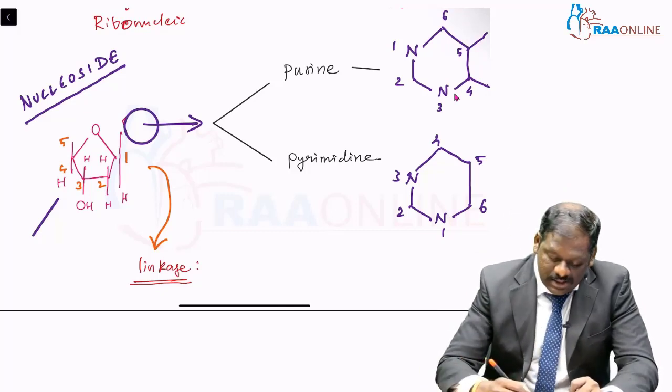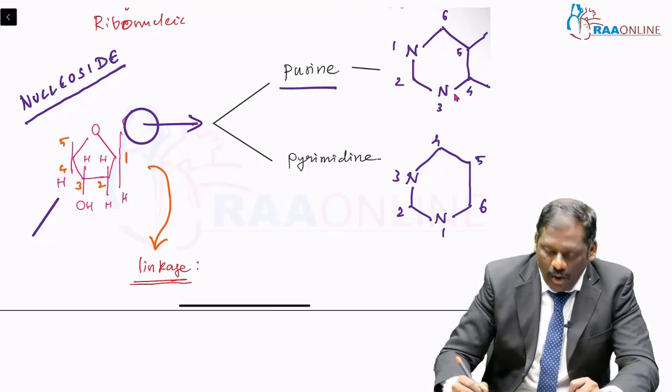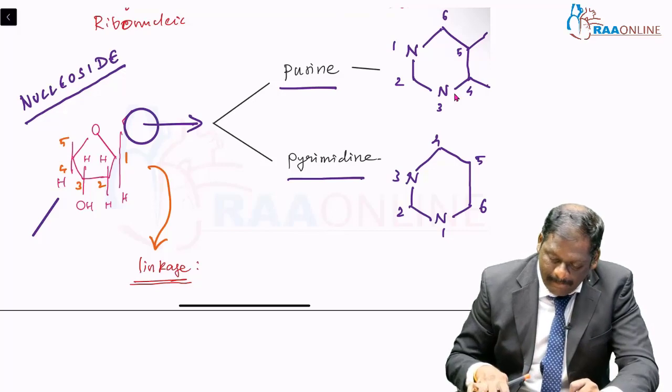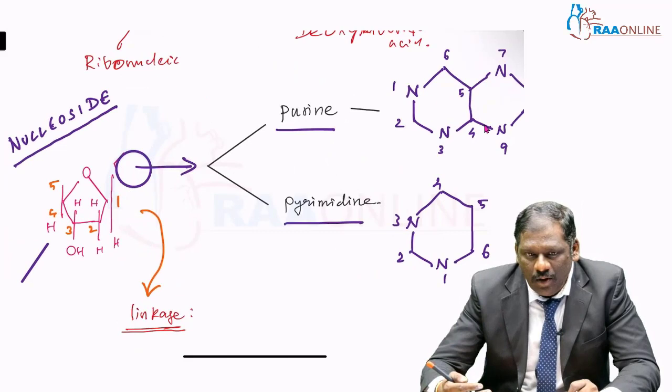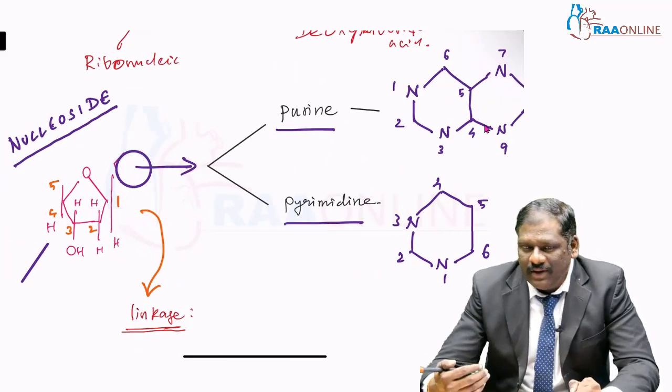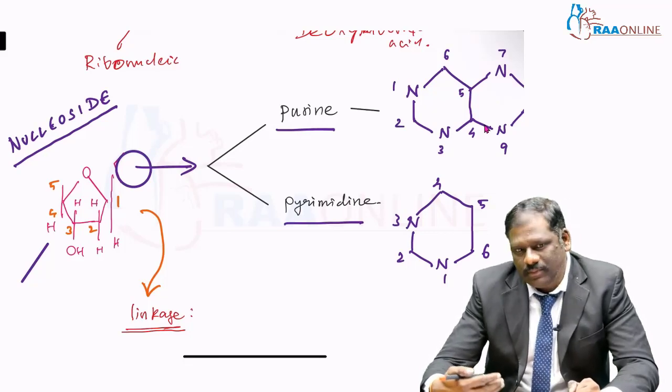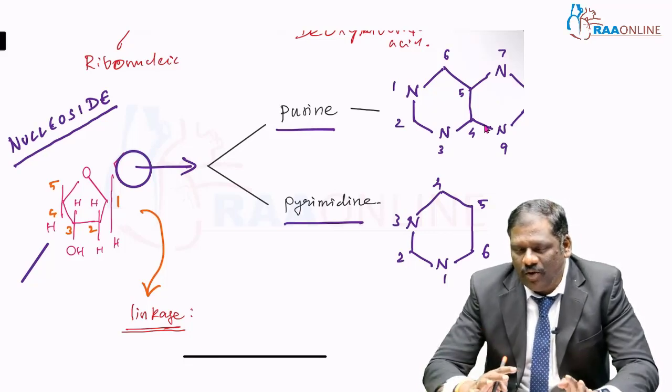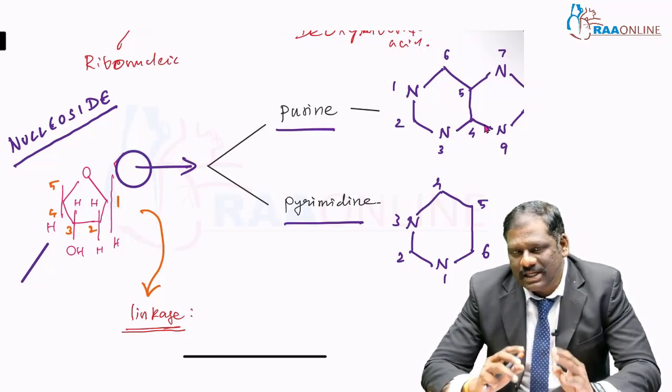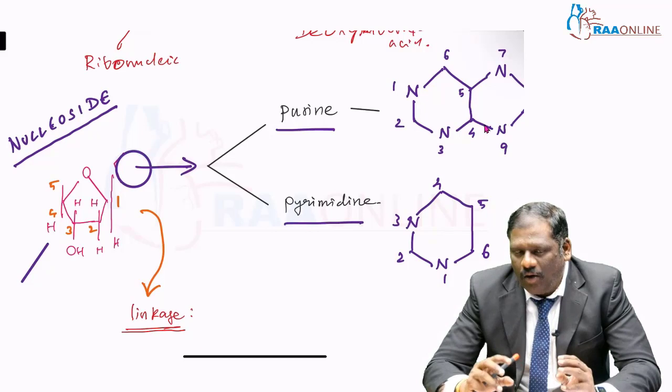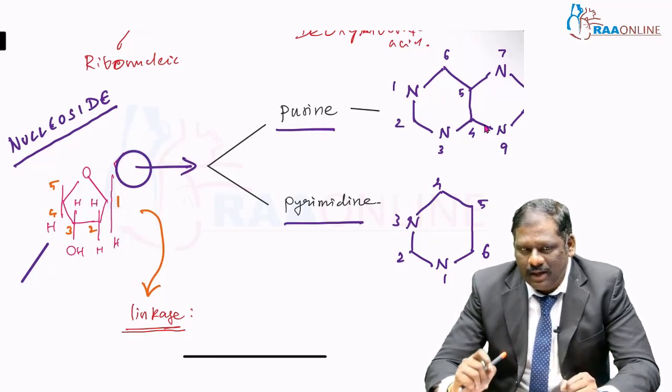Now, this nitrogenous base could either be a purine or a pyrimidine. I will be explaining about these nitrogenous bases a little later. As of now, we just see what are the significant types and what are the significant linkages on each of the structural backbones of your DNA.